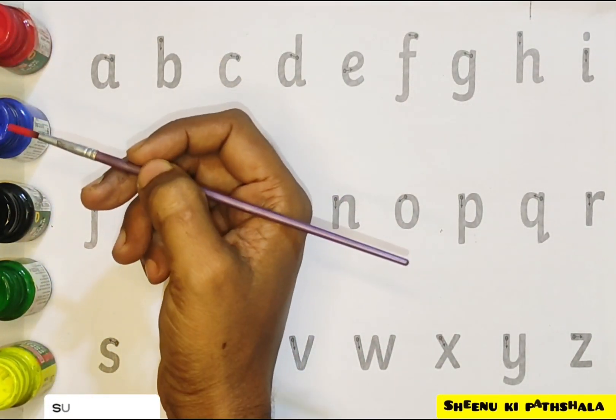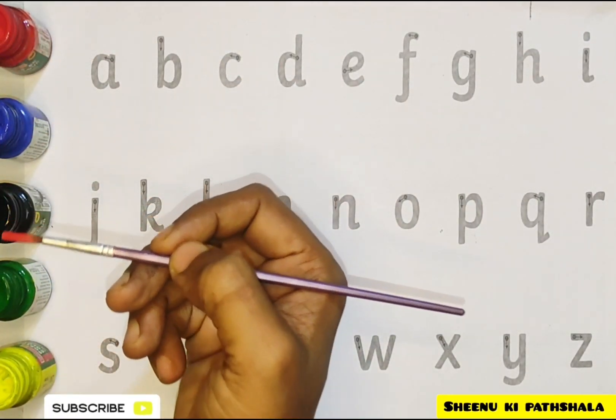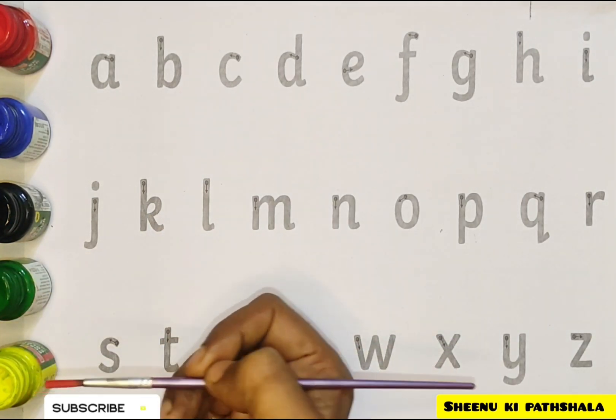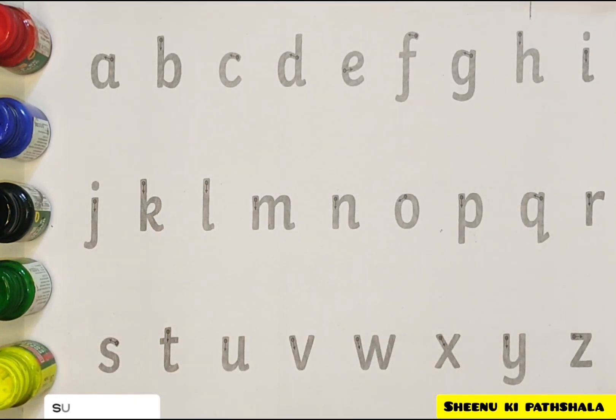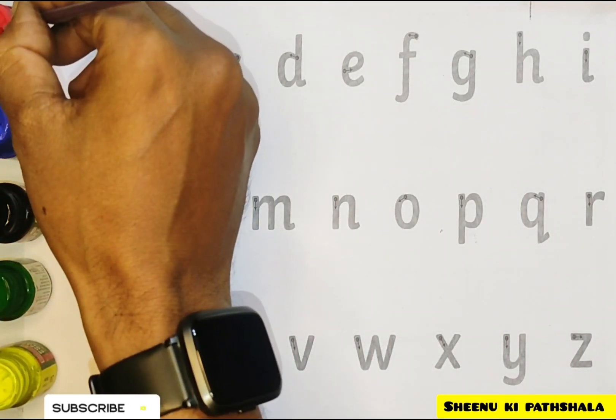Red color, blue color, black color, green color, yellow color. Today we are going to learn ABCD in small letters. Let's start. Red color.